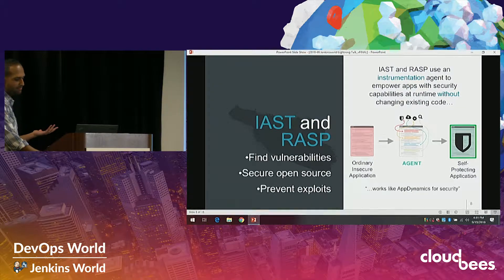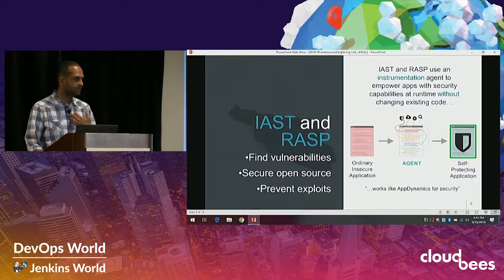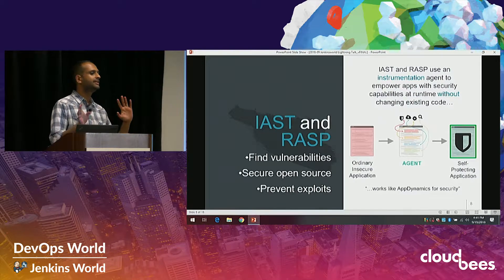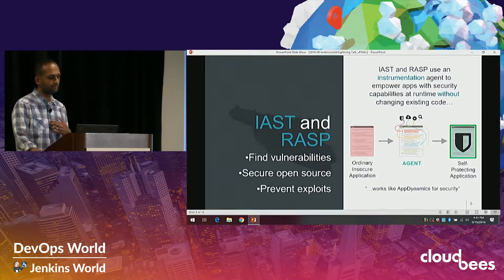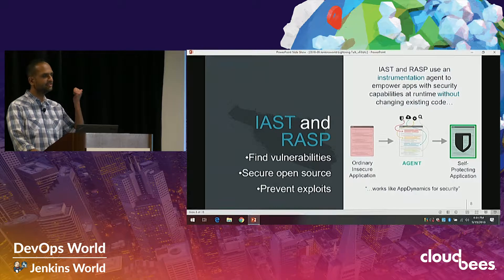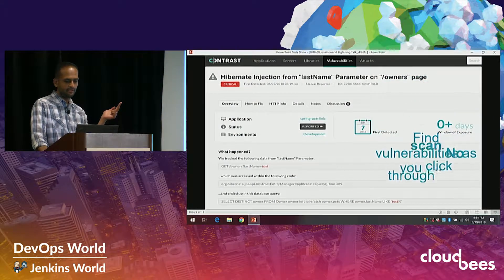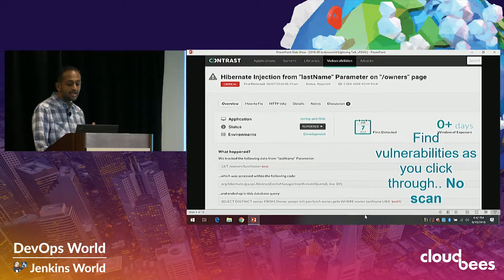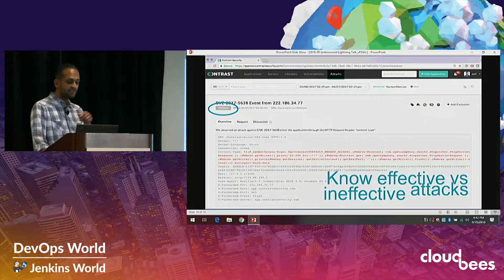Contrast and a few other vendors use this concept of dynamic instrumentation — similar to New Relic or AppDynamics, we use bytecode instrumentation to hook into the application. It helps you find vulnerabilities whether they're in your own code, libraries, or frameworks, and it helps you defend against attacks. As an example, without scanning it finds vulnerabilities, tells you the line of code, where the problem originated, and exactly what SQL query will cause the attack in production.